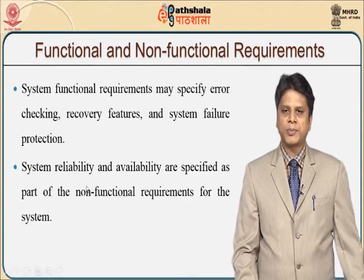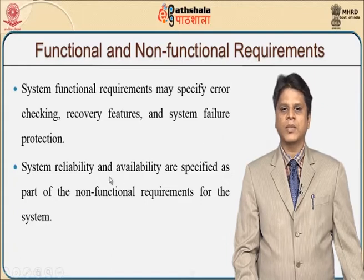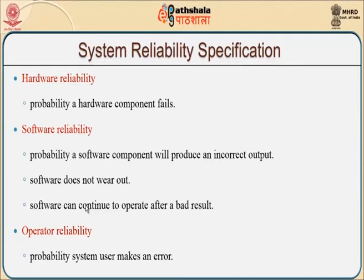Although software reliability is part of a non-functional requirement, this reliability study is also major in focusing on functional requirements. A system's functional requirements might specify error checking, recovery features, and system failure protection. System reliability and availability are specified as non-functional requirements. In case of a system, we might have to check for hardware, software, and operator. For hardware reliability, we check the probability that a hardware component fails given an execution time. Software reliability is the probability a software component will produce an incorrect output. Software does not wear out, but applied across various compatibilities or versions, how it performs is the understanding we get through reliability.